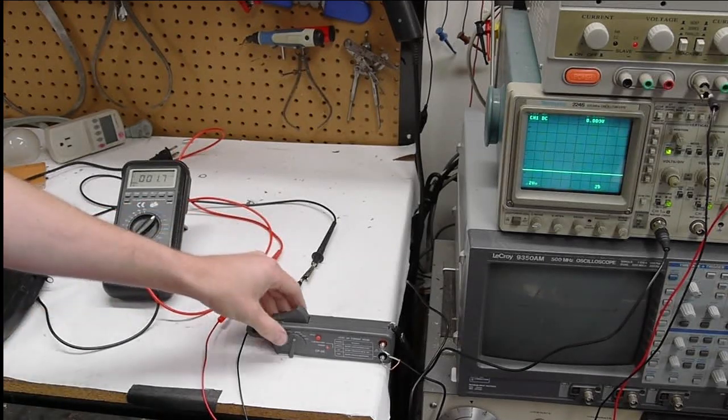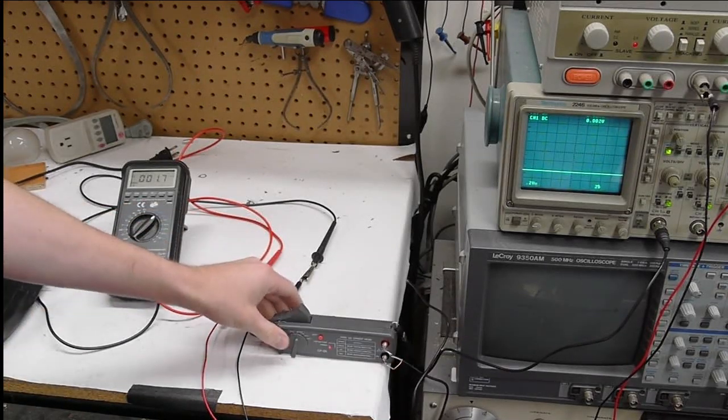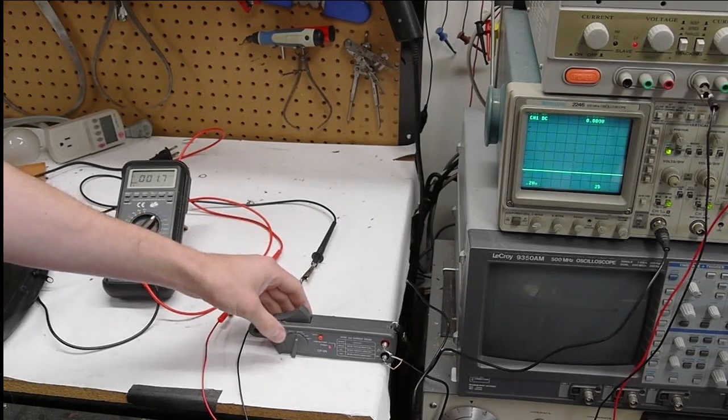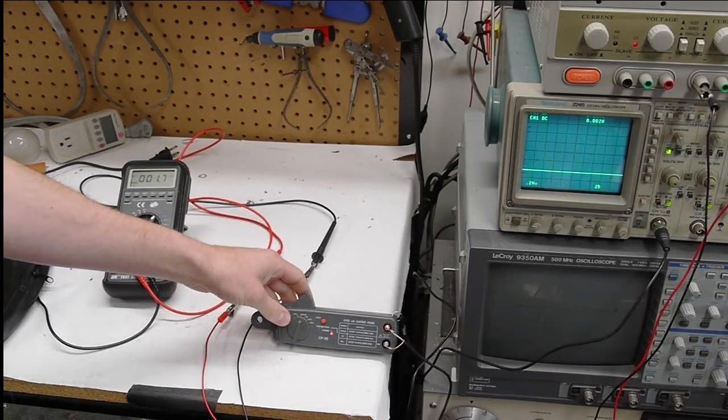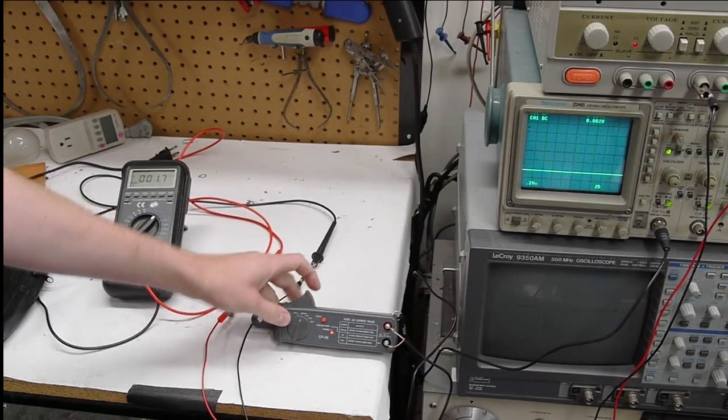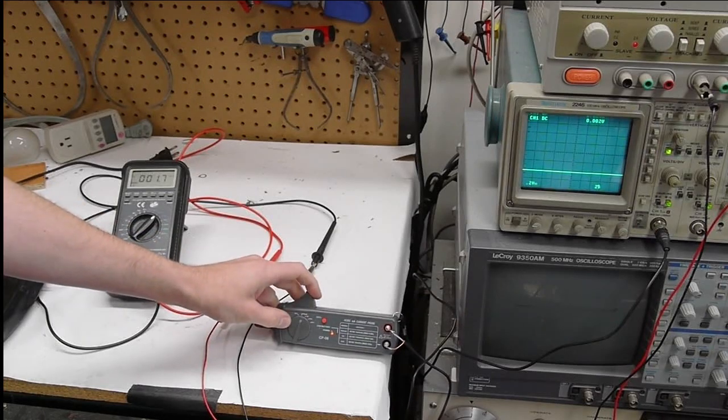I recently bought this low-cost clamp-on current meter from eBay. This was about $70 shipped, and it doesn't even really have a brand on it. The model number is CP06.